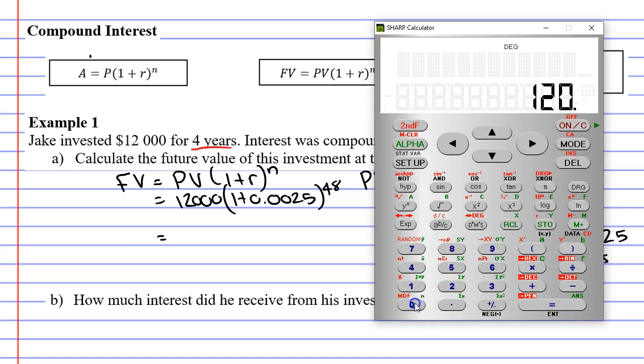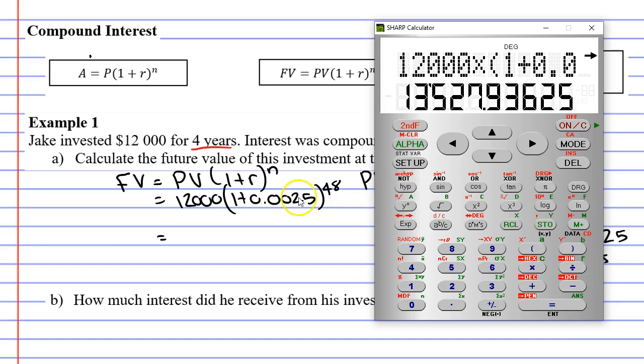So, 12,000 times bracket, one plus 0.0025, close our brackets, and put this to the power of 48. What do we get? $13,527.